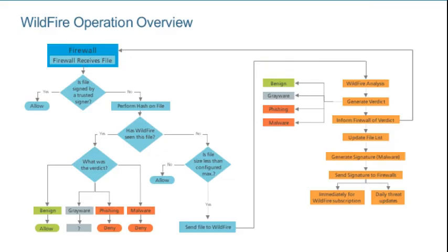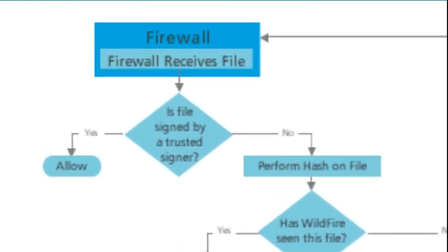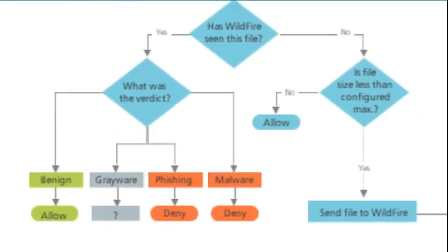Wildfire Concepts. The flowchart provides an overview of how a firewall works with Wildfire technology. When a firewall encounters a file, it will check to see if the file is signed by a trusted signer. If the answer is yes, then the firewall trusts that the file does not have hidden malware and allows the file to be delivered. If the answer is no, then the firewall creates a hash number for the file and uses the hash to work with Wildfire to determine if the file already has been sent to Wildfire.